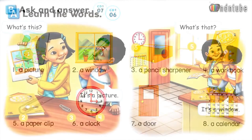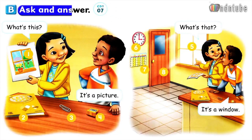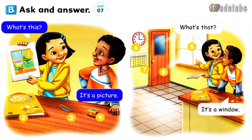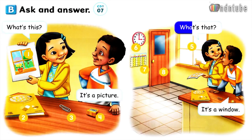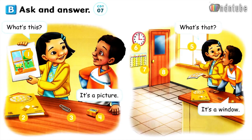Page 6. B. Ask and answer. What's this? It's a picture. What's that? It's a window.